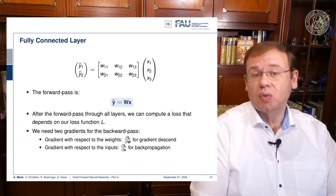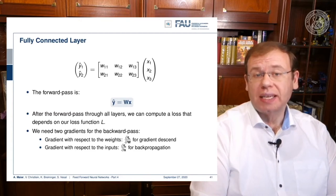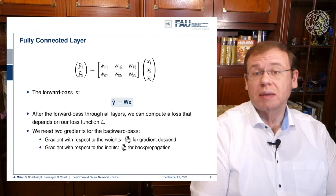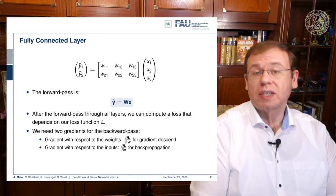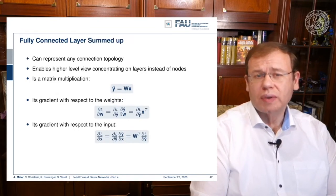We multiply the two weight vectors with x. In the forward pass we determine y-hat for the entire module using a matrix. To compute the gradients we need exactly two partial derivatives: the derivative with respect to the weights, and the derivative with respect to the inputs.